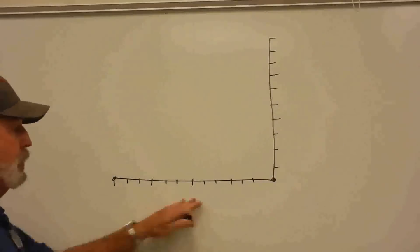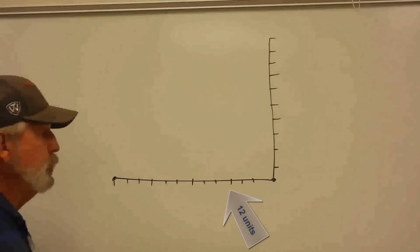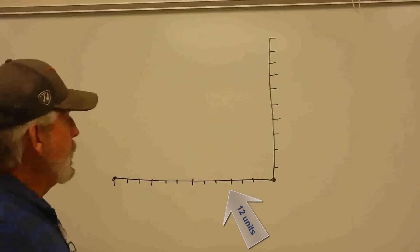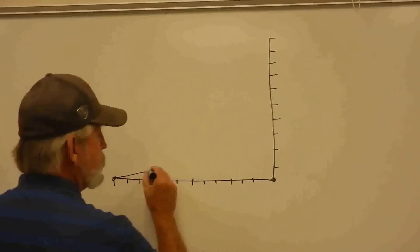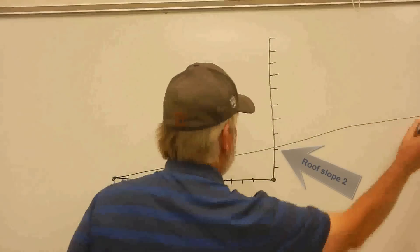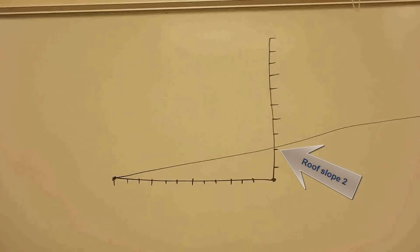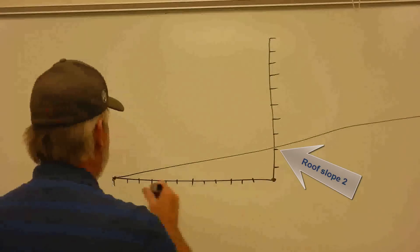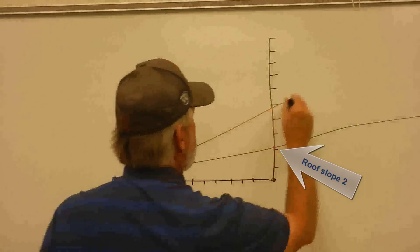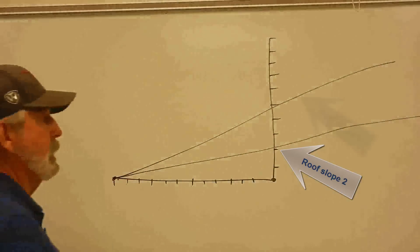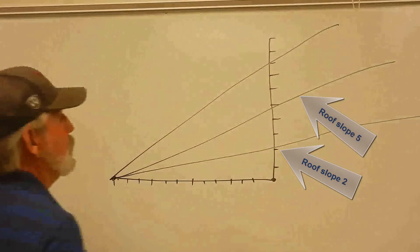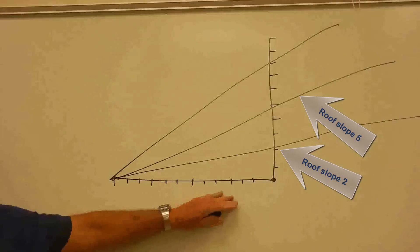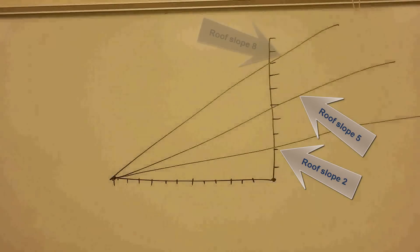So in this case, I've got 12 marks across here. To describe a roof slope, if I'm going over 12 and I come up 2, then this is what the roof pitch looks like, or the roof slope. If I'm going to come over 5, or up 5, then that's what the angle is. Let's go 8. So this is the way that you describe a roof pitch or roof slope.